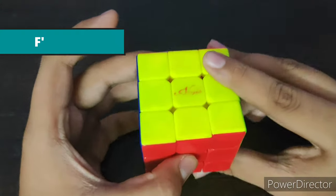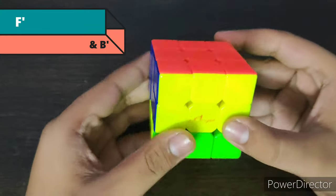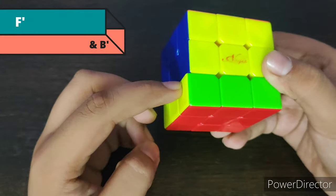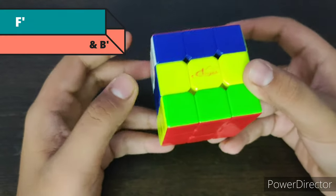Okay, so the next part is the F prime goes like this and the back prime. If F has moved this side to back prime, it goes like this.